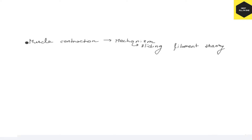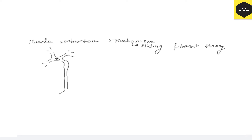Imagine this is a neuron — this is the cell body; I am not drawing the dendrites. This is a motor neuron, and it will end having synaptic bulbs.